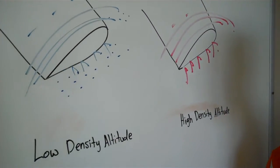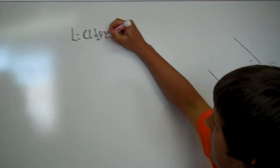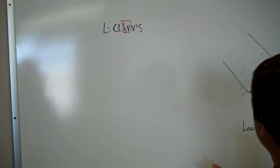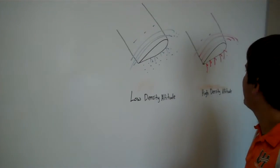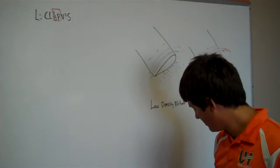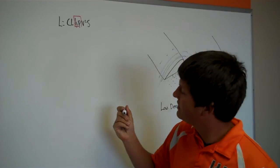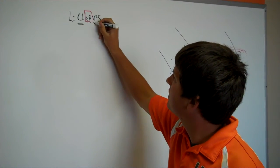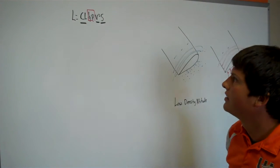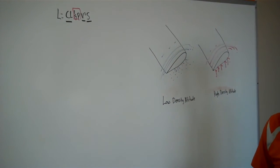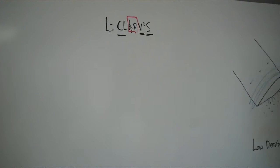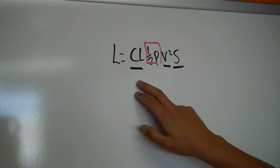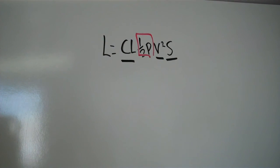In our lift equation, the one-half air pressure is the factor here. So if we have high density altitude, we're going to need a higher angle of attack, higher velocity, or higher surface area. We can't change the surface area of our blades, so we can either go faster or get a higher angle of attack or coefficient of lift.